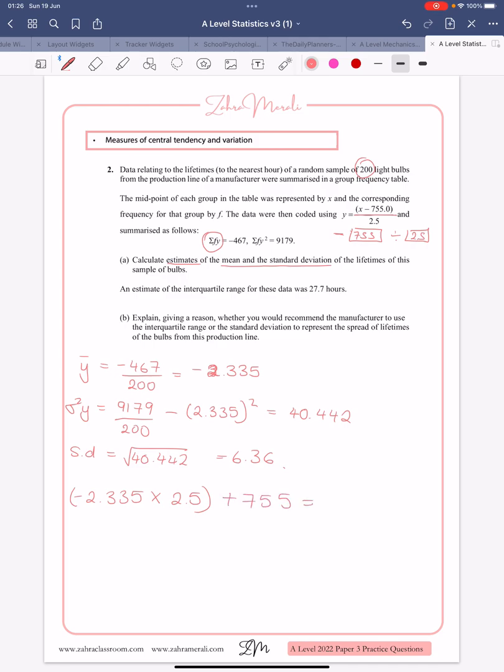And we get 749 point something, but 749 is a sensible way to put that. So we'll put it to three significant figures.